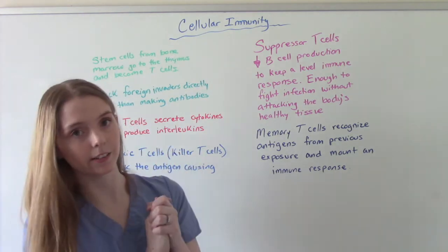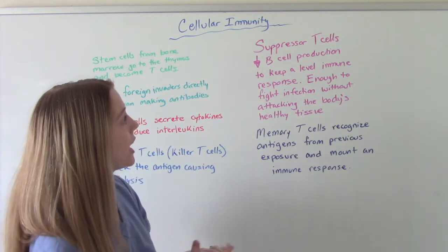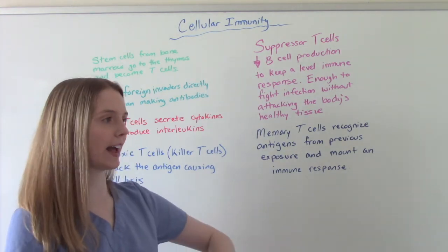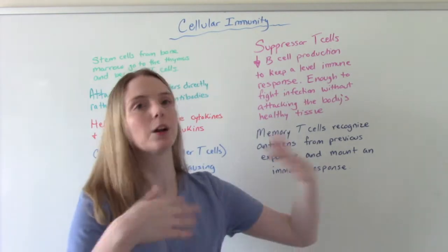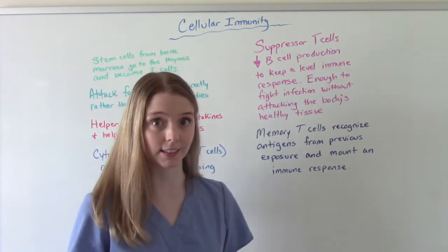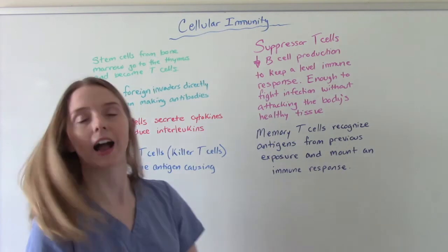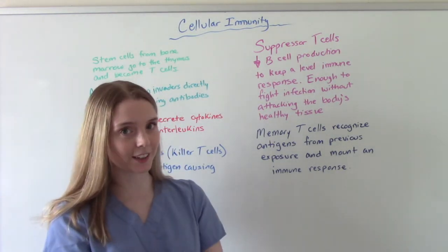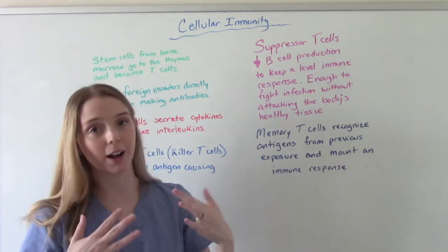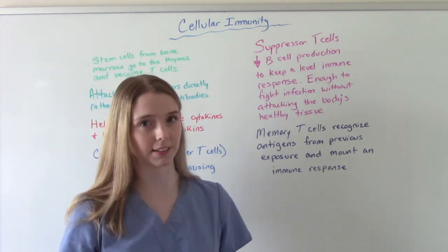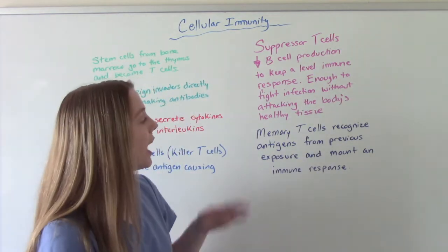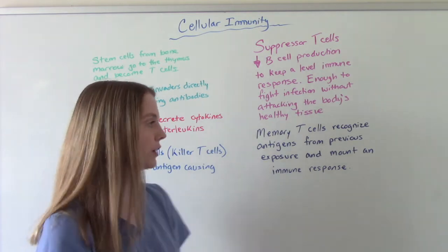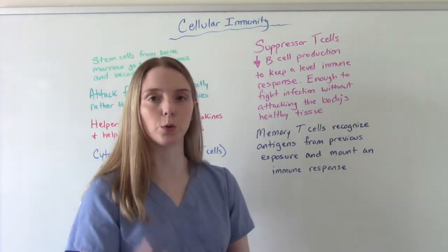We have suppressor T-cells, which decrease B-cell production to keep a level immune response. Because you don't always want to have this big immune reaction — it's not always necessary. So suppressor T-cells keep everything level: just enough to fight off the infection, but not so much that we start attacking normal healthy cells. And then our memory T-cells recognize antigens from previous exposure and use that information to mount an immune response.